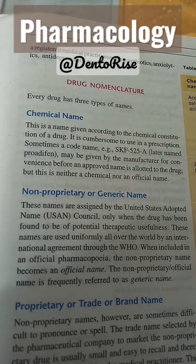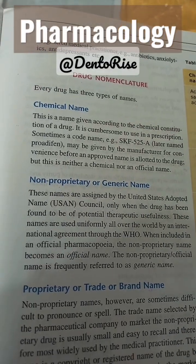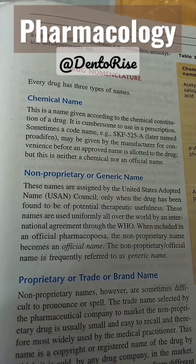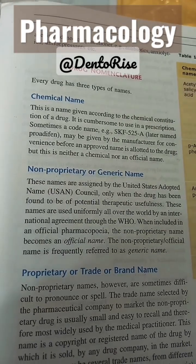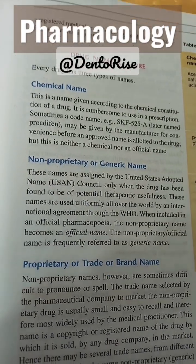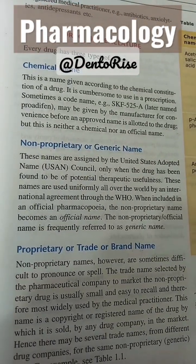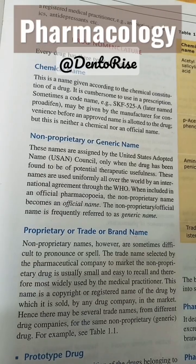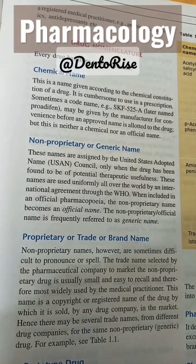Every drug has three types of names. Number one, the chemical name. Number two, the non-proprietary or the generic name. Number three, the proprietary name or the trade name or the brand name.